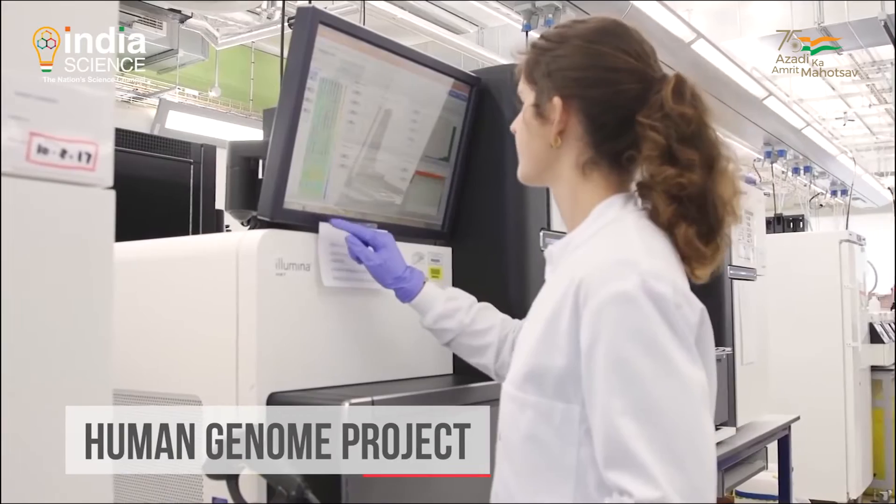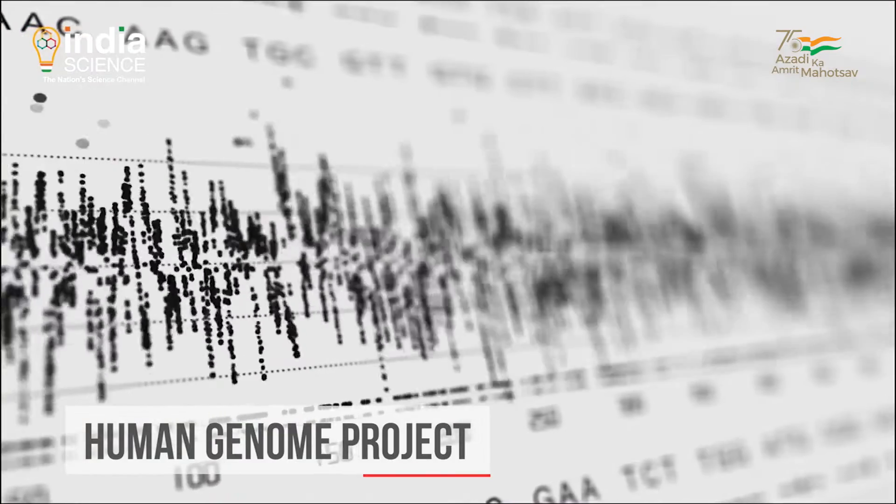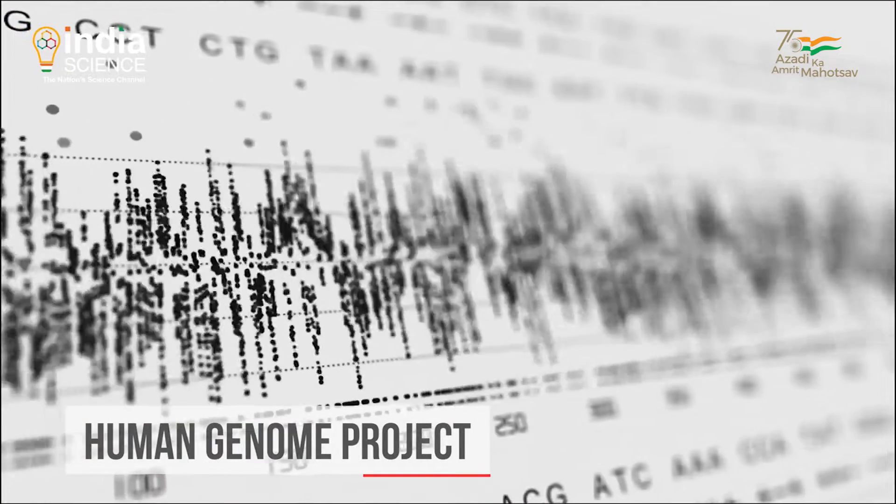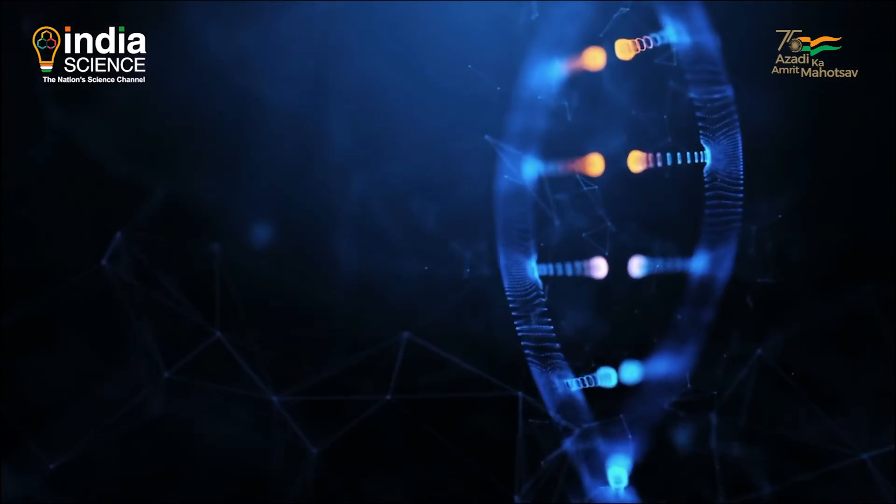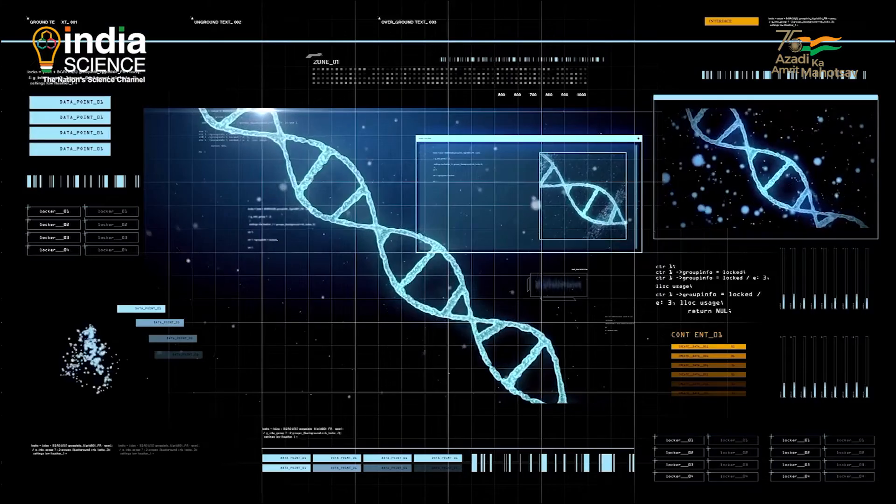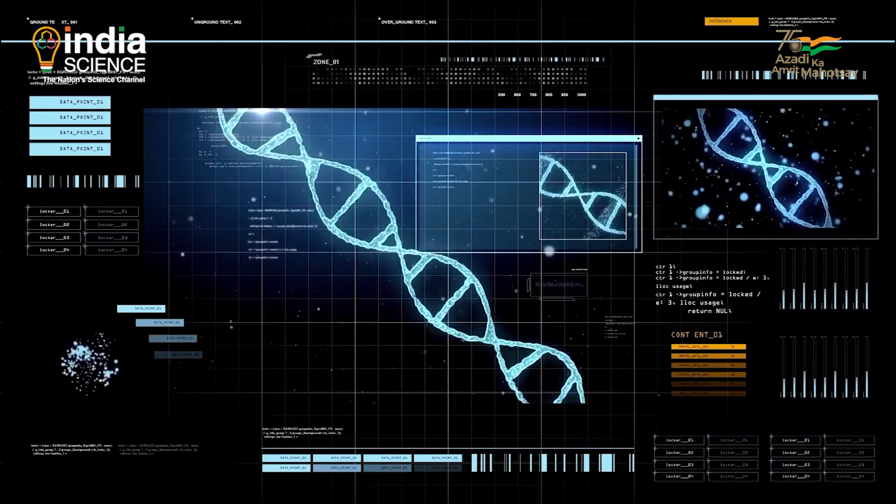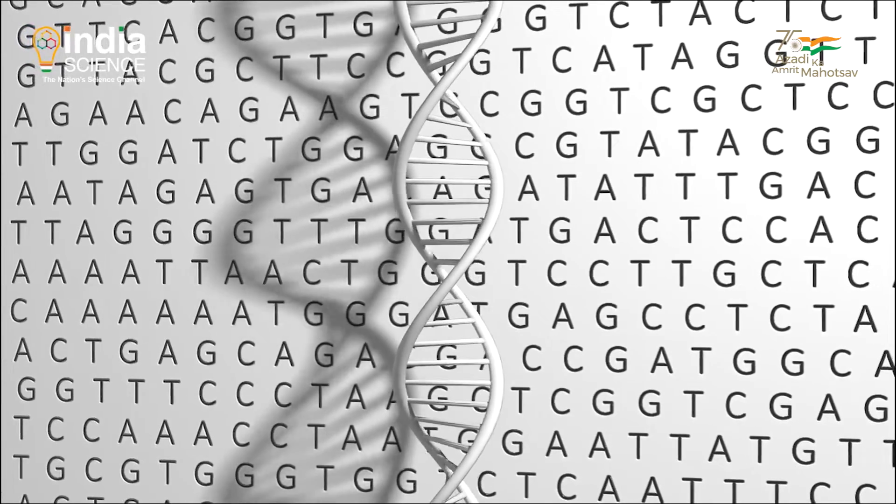The HGP has revealed that there are probably more than 20,500 human genes. This ultimate product has given the world a resource of detailed information about the structure, organization, and function of the complete set of human genes.